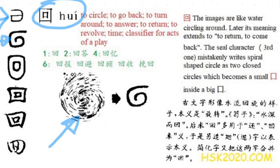From the shape of the character, you can see the third one is the seal character. They changed the spiral shape into a closed circle, with one circle inside another big one. And that's a mistake — a mistake we carry until today. 回 is a small circle inside a big circle, but originally it was a spiral shape.